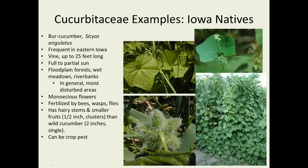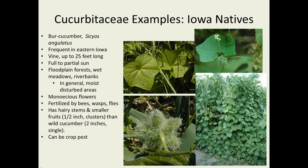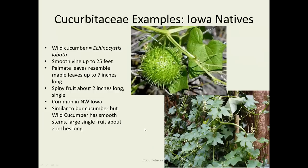In some areas the burr cucumber is actually a crop pest — on the lower right is burr cucumber growing on a corn crop, which would be quite frustrating if it took over your corn field. Another Iowa native is the wild cucumber, Echinocystis lobata — a different genus with smooth stems. The fruits are single and much larger, a couple inches in diameter, hanging in single units rather than little clusters like the burr cucumber. Leaves are more lobed, looking more like a maple leaf. This one is common in northwest Iowa.